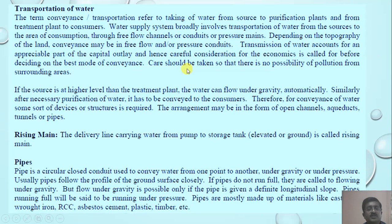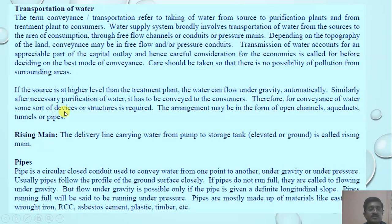Care should be taken so that there is no possibility of pollution from surrounding areas. If the source is at a higher level than the treatment plant, the water can flow under gravity automatically. After necessary purification of water, it has to be conveyed to consumers. Therefore, for conveyance of water, some sort of devices or structures are required. The arrangement may be in the form of open channels, aqueducts, tunnels, or pipes.